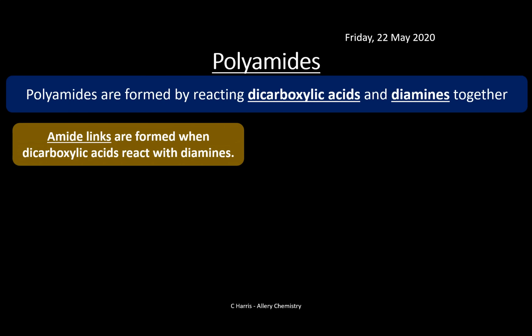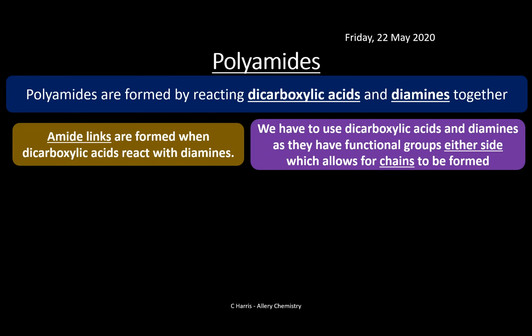The amide link is formed when dicarboxylic acids react with diamines — no surprise, since it's a polyamide. We must have two carboxylic acid groups per monomer and two amine groups per monomer. We need a functional group on either side so that chains can form all the way along the polymer. That allows us to build these long chains using a dicarboxylic acid and a diamine.